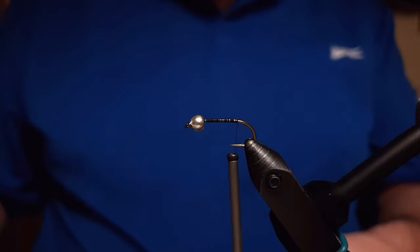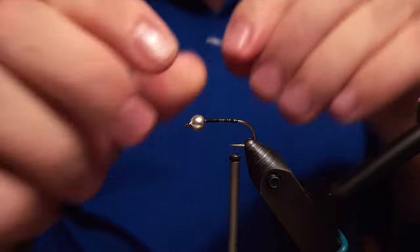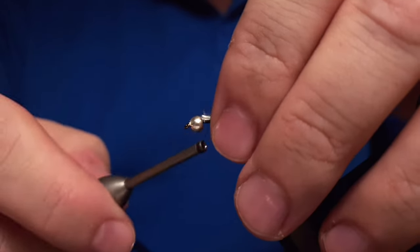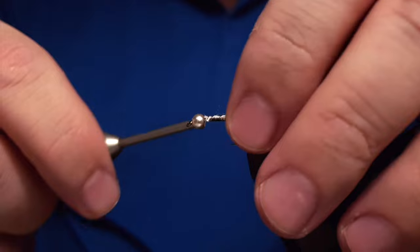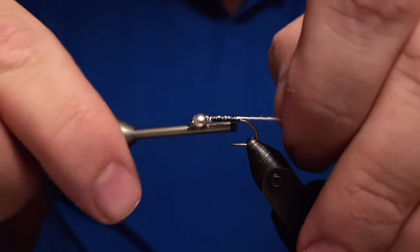To start, we use black thread and attach that to the hook. Then we'll take this white piece of Aurora yarn and attach that to the hook as well. That white piece is the back of the fly.